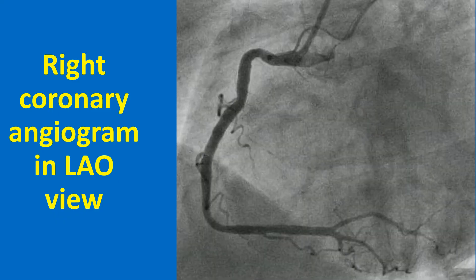The LAO view usually shows the full length of the right coronary artery in a C-shape. Distally, the right coronary artery divides into PDA and PLV at the crux cordis, which is the junction of the atrioventricular and interventricular grooves posteriorly. The artery which crosses the crux is defined as the dominant coronary artery. Right coronary dominance is much more common than left dominance. Even when the right coronary artery is dominant, the major portion of left ventricular myocardium is supplied by the left coronary artery.